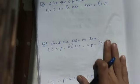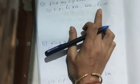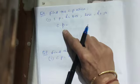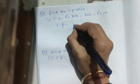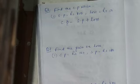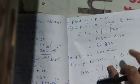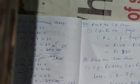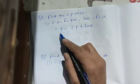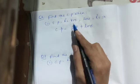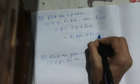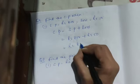Question number 6: find the CP when SP is 800 and loss is 50. It is a loss, so CP will be greater. To find CP in case of loss: SP plus loss. We add the loss because the buying price was more than the selling price. So CP equals 800 plus 50, which is rupees 850.